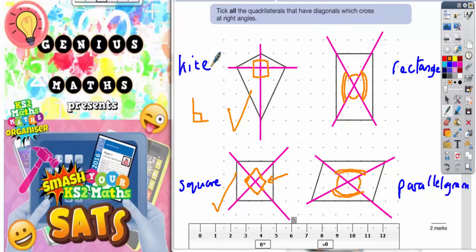It should be the kite and the square that we have ticked. Kite and square, they're the ones with diagonals that cross at right angles.